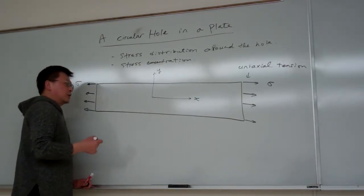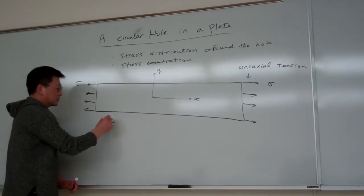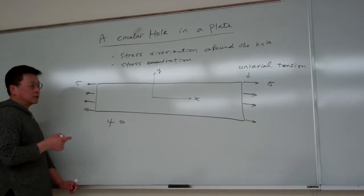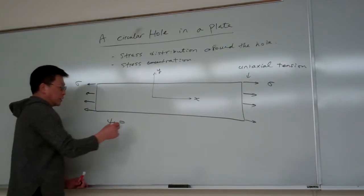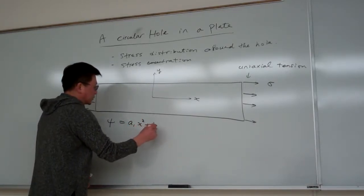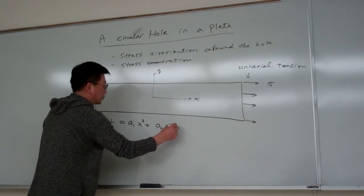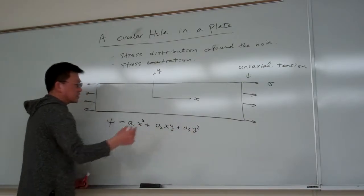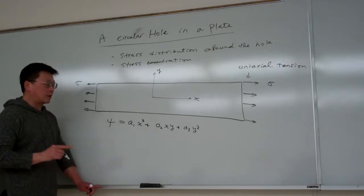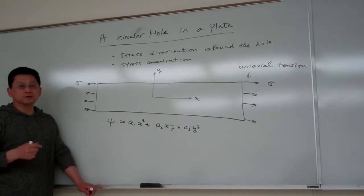If you remember before, when we start with our discussion of the stress functions, for this kind of simple case, uniaxial tension as a loading, we could have this option. For example, a1 x squared plus a2 xy plus a3 y squared. We try the second degree polynomial. And at this moment, if you still have a doubt why I choose so, then basically you fall behind too much. So try to catch up.